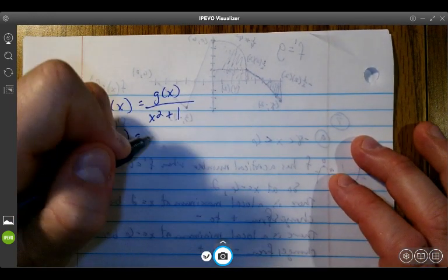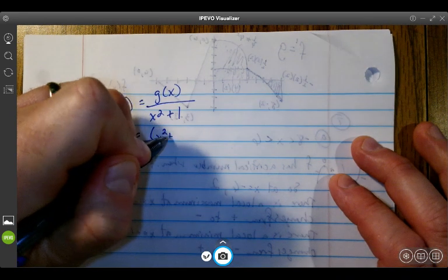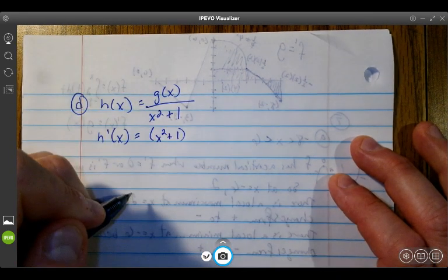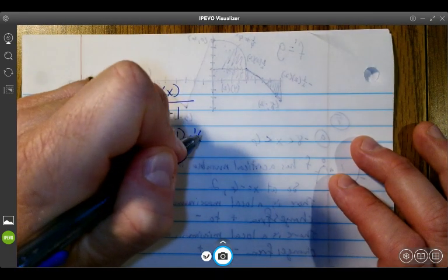I want to use the quotient rule. Remember, quotient rule says to take the denominator x² + 1 times the derivative of the numerator, which would be g'(x).